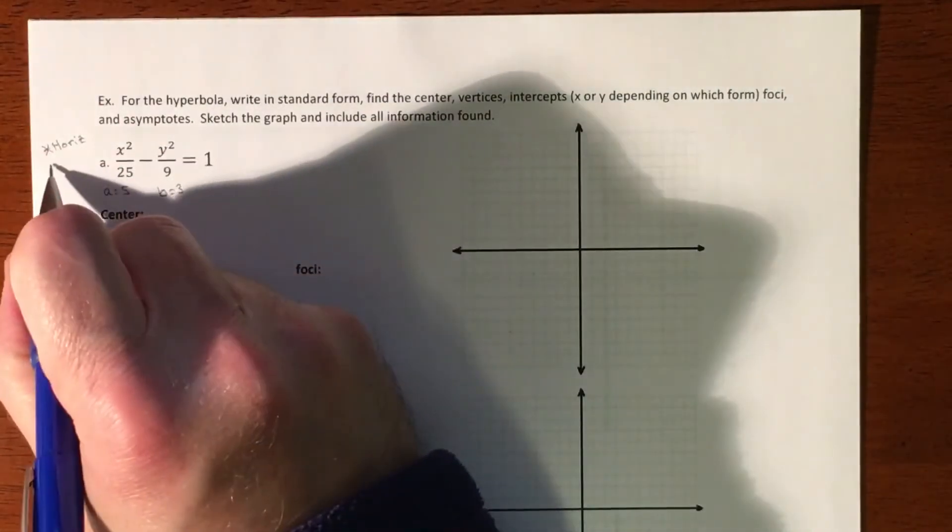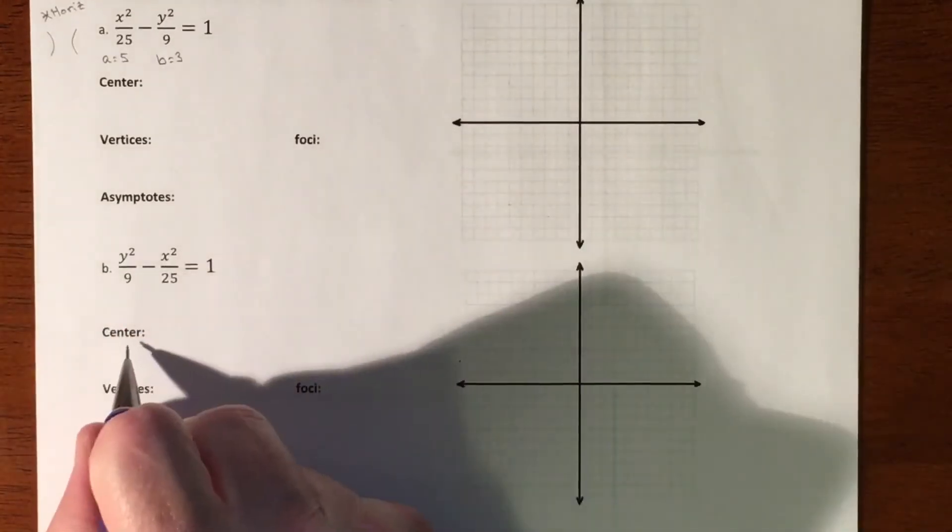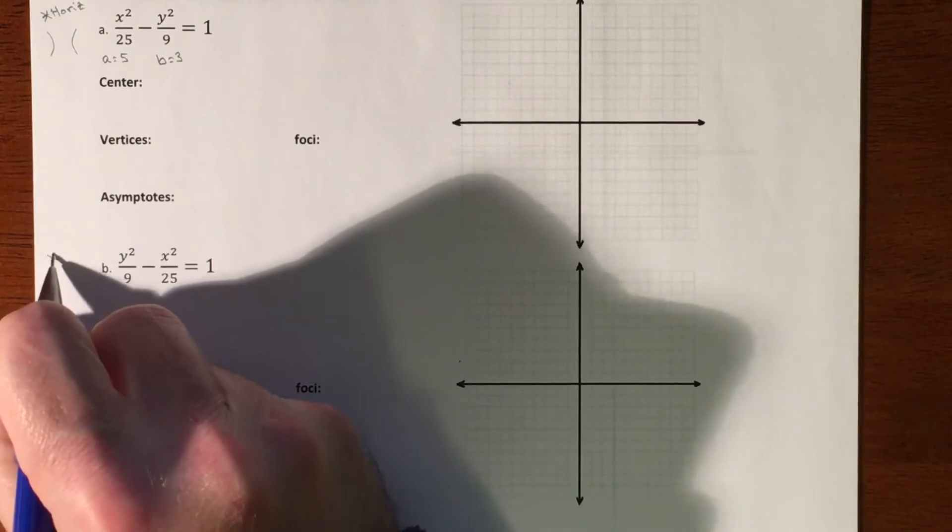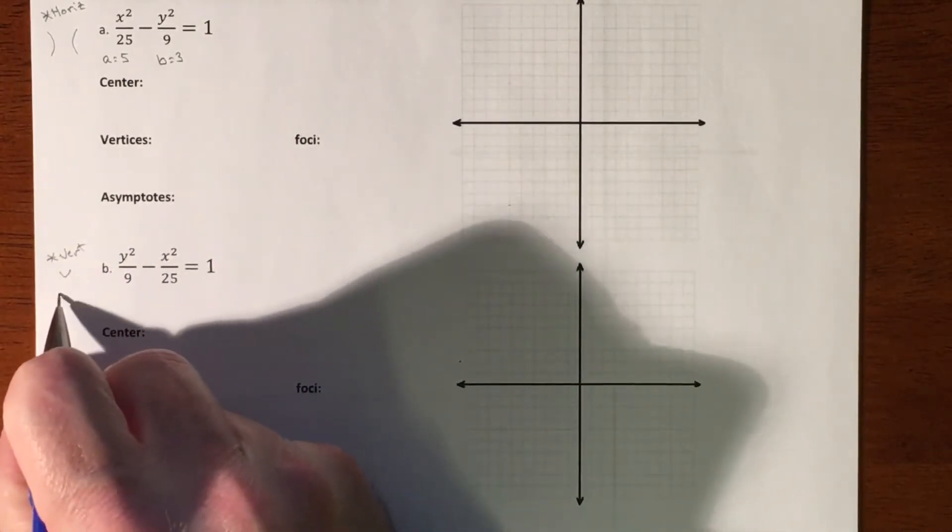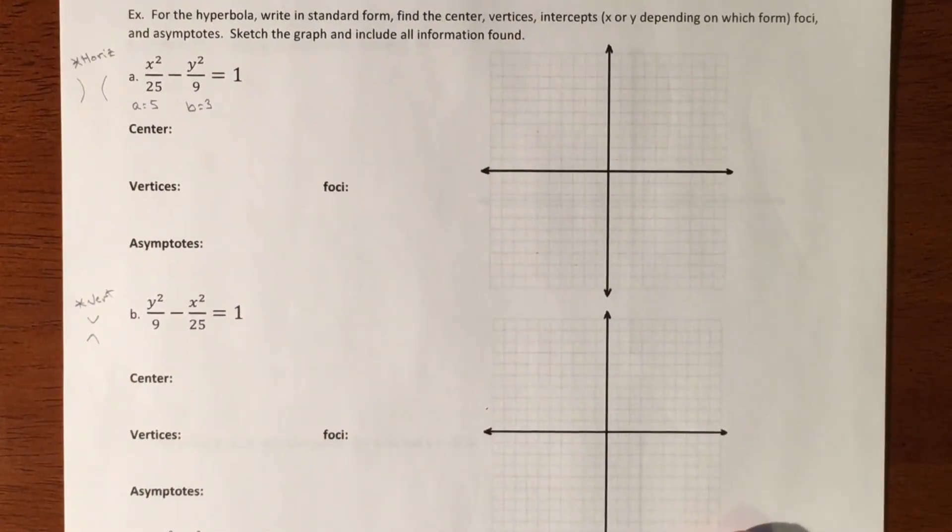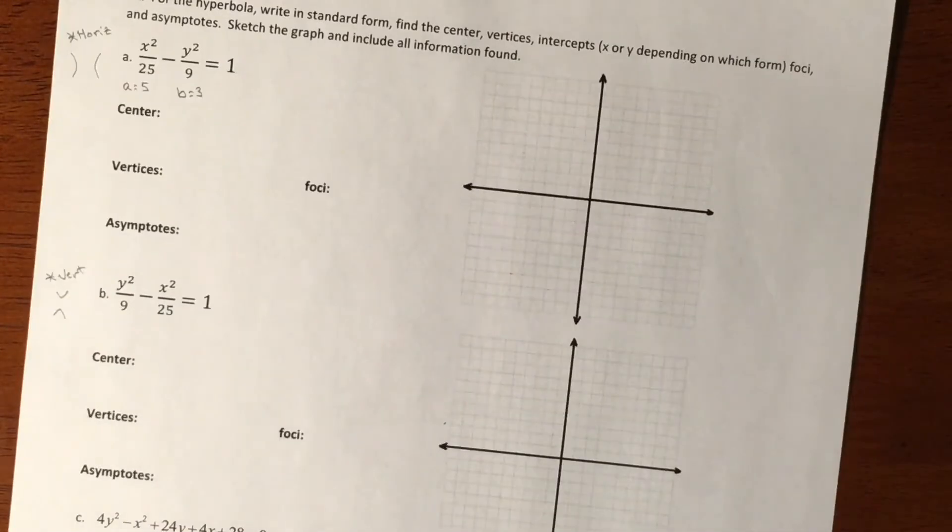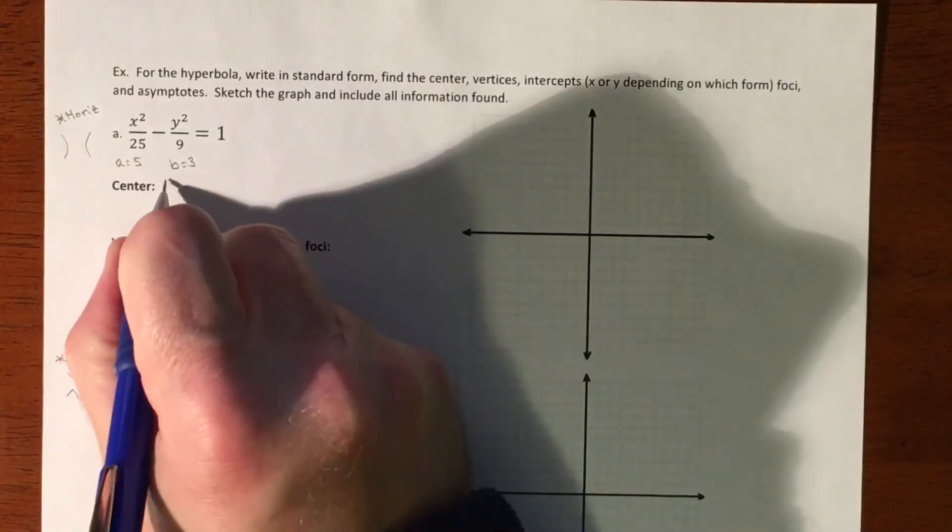So this hyperbola is going to look like that, versus this one being vertical. So our graph is going to look like that and like that. All right, so let's put all our pieces together. So on this one, we're going to, our center is at 0, 0.